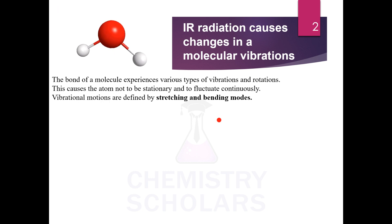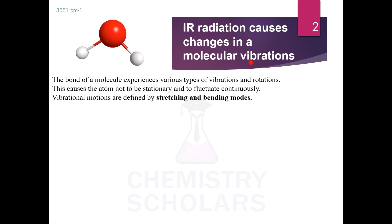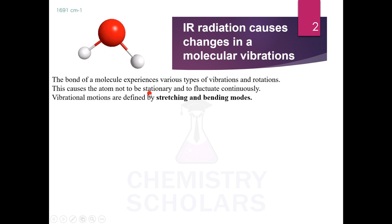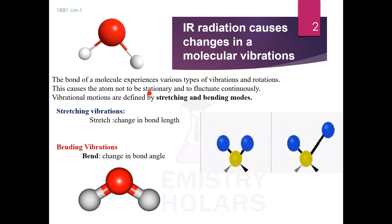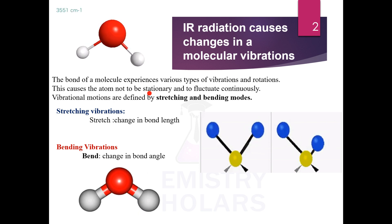IR radiations cause changes in the molecular vibrations. By absorbing IR radiation, a molecule starts to vibrate and this causes the atoms to fluctuate continuously — it is not stationary. There are two types of vibrations taking place: one is stretching and one is bending vibrations.